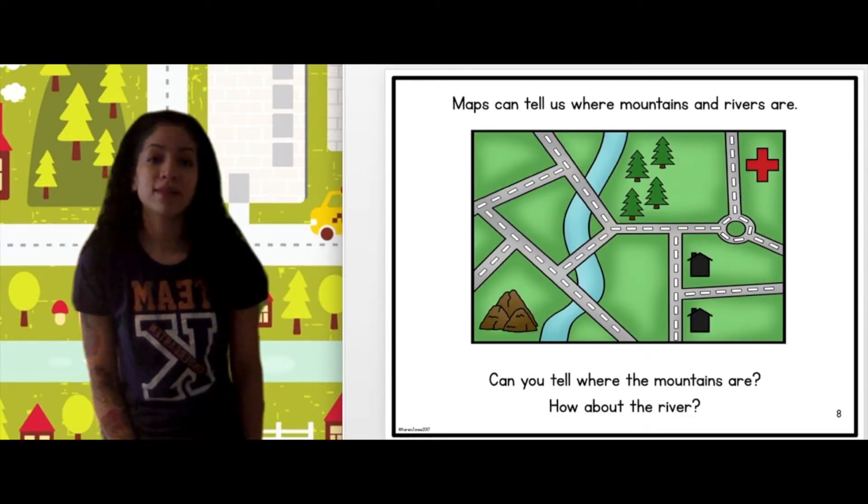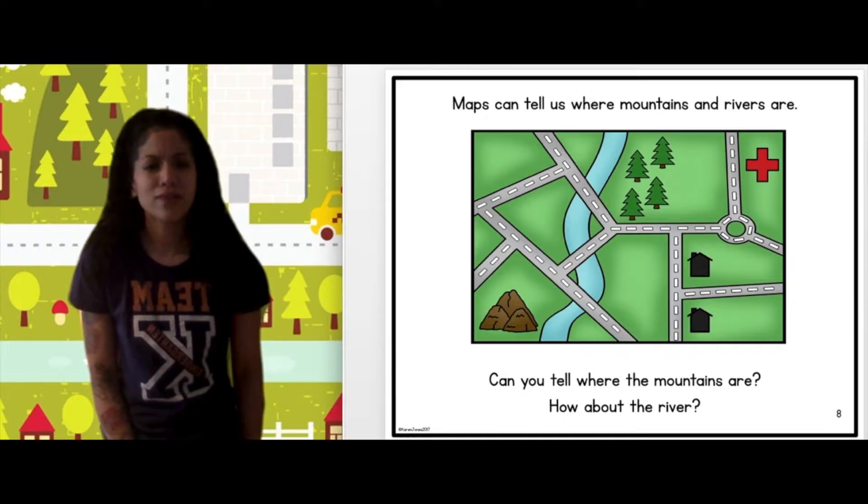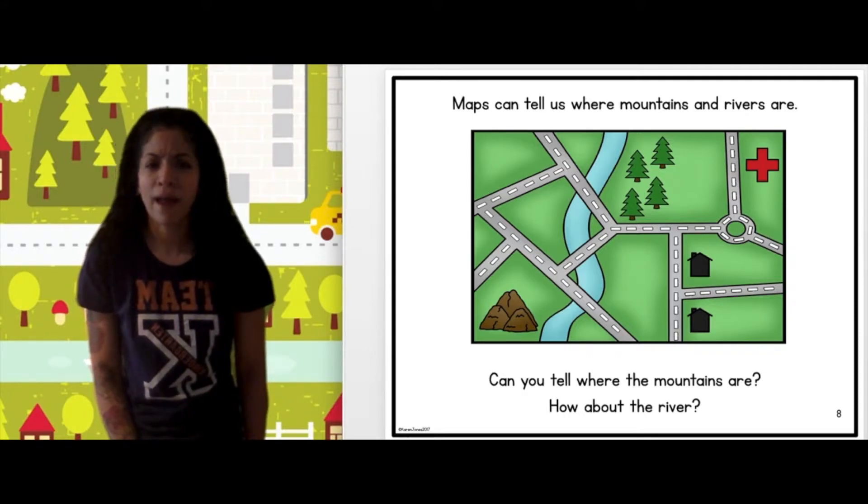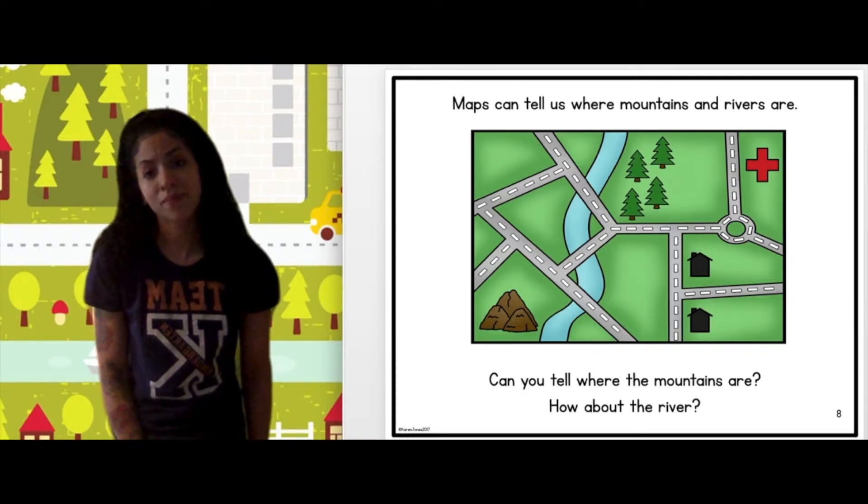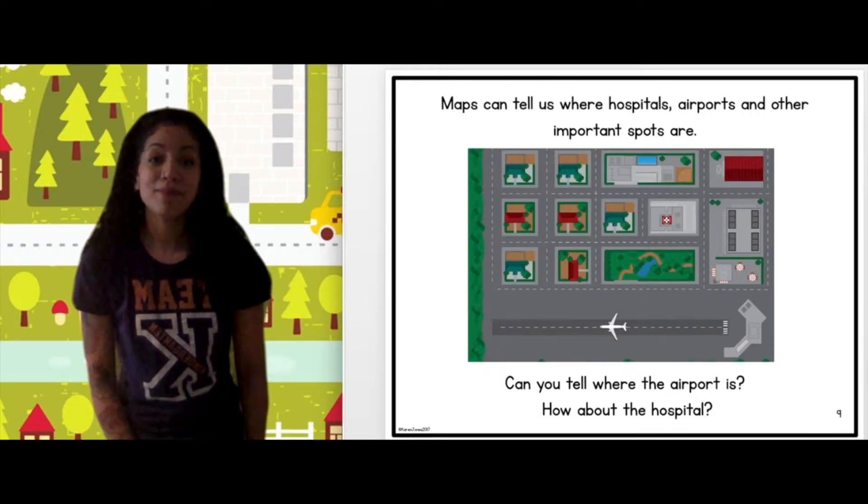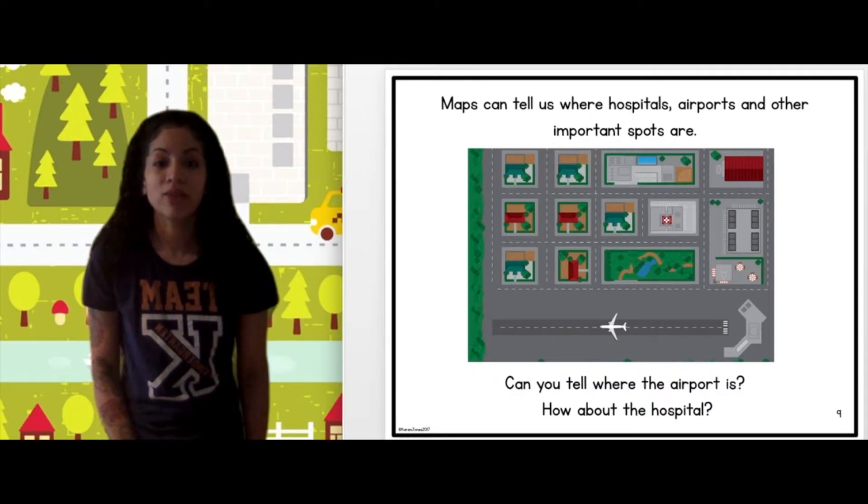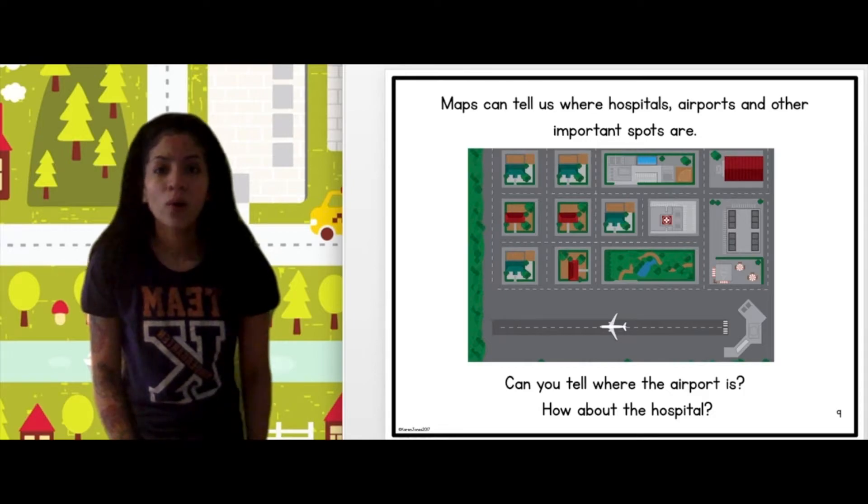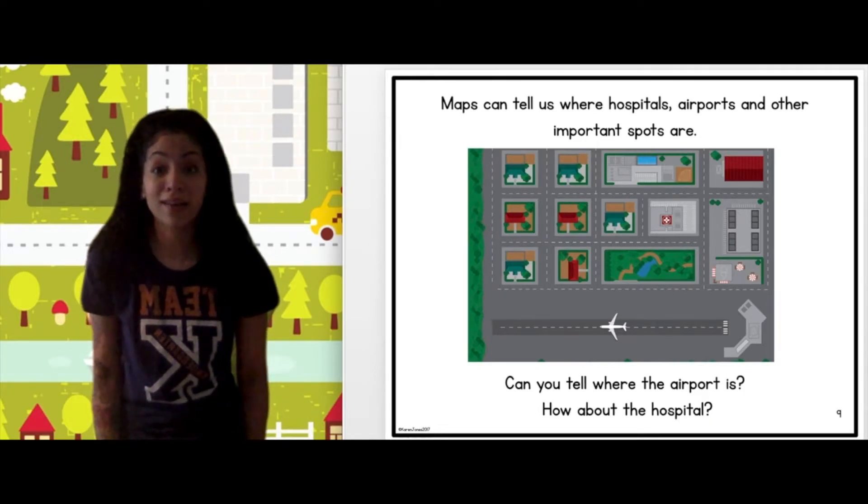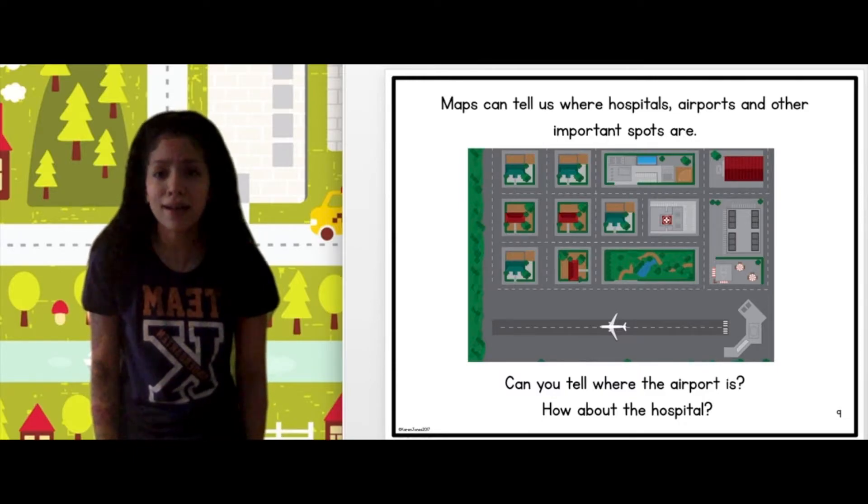Maps can tell us where mountains and rivers are. Can you tell where the mountains are? How about the river? Maps can tell us where hospitals, airports, and other important spots are. Can you tell where the airport is? How about the hospitals? What symbol do you see that could tell you where the airport is? What about the hospital? What do you notice?